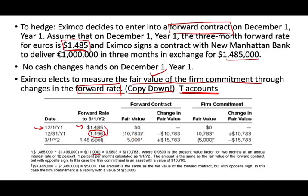By March 1st, year one, the spot rate was 1.48, which is good for us because we can sell euros at 1.485 — meaning we have a $5,000 gain. The value of the forward contract went from negative $10,783 to positive $15,783. The value moved from negative to positive, giving us a gain because the spot rate was lower than our contracted rate of 1.485. We locked in our price and did well.